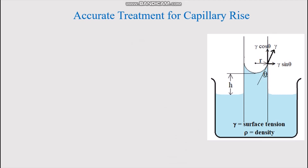For the accurate treatment of capillary rise: a capillary is immersed in a bulk liquid. At the point of contact, the contact angle is theta, r is the radius of the capillary, gamma is the surface tension acting along the tangent. This vector has two components: the vertical component γ·cosθ (upward) and the horizontal component γ·sinθ. The height of the liquid column is h, and rho is the density of the liquid.